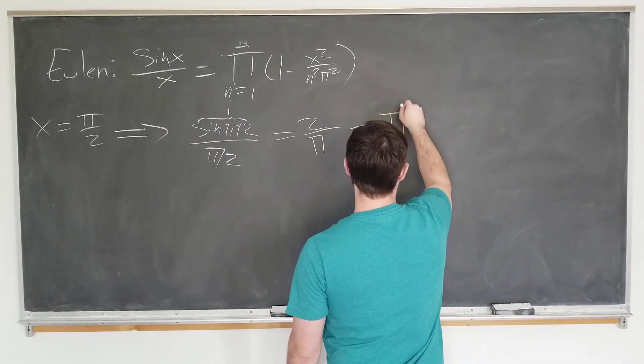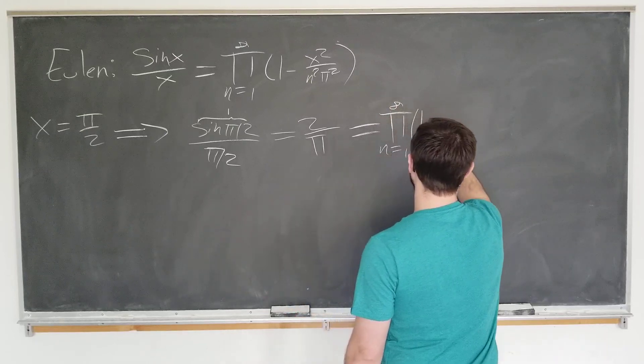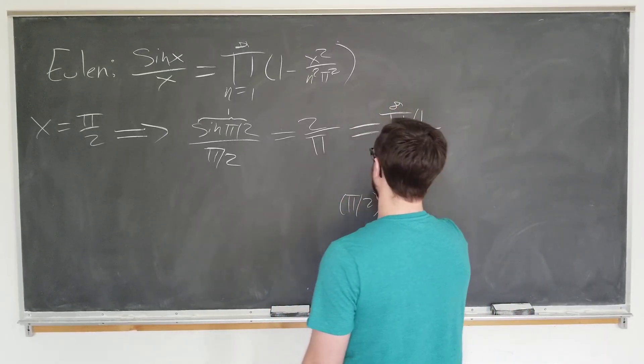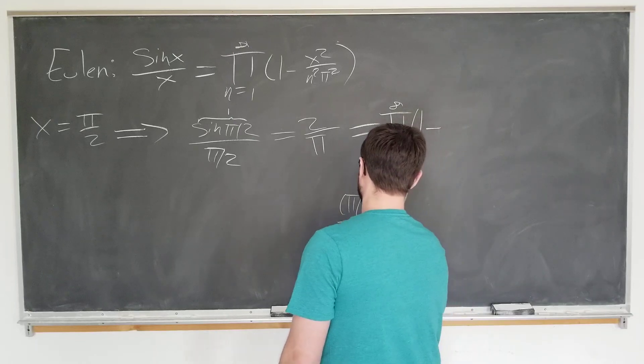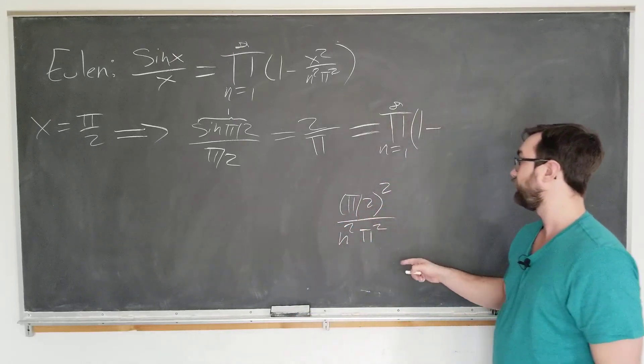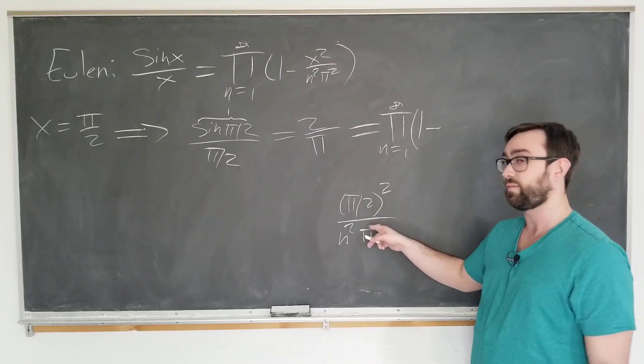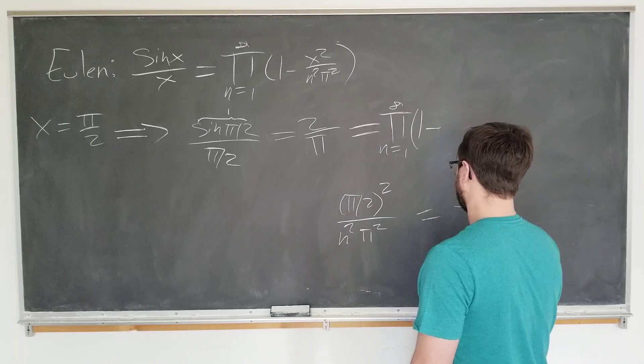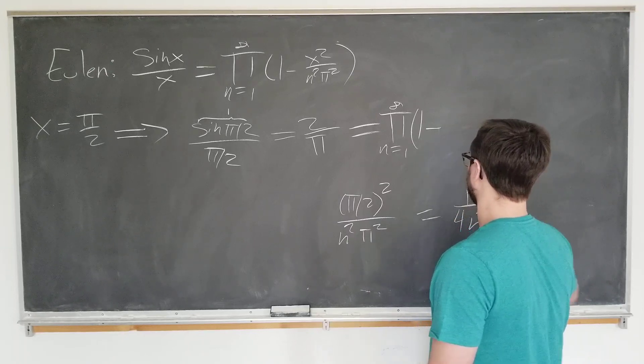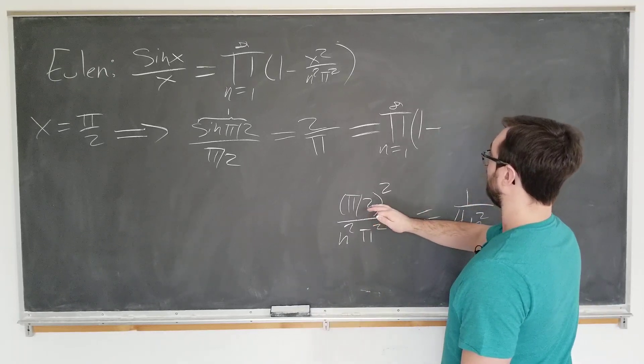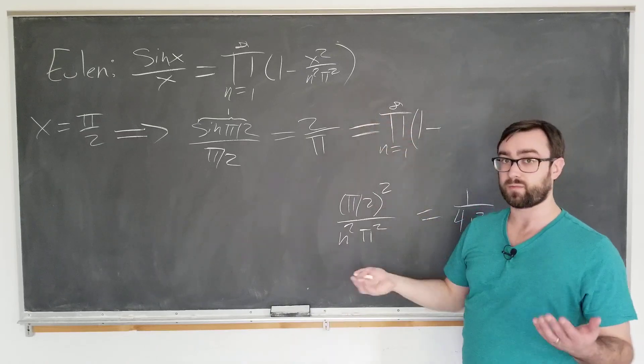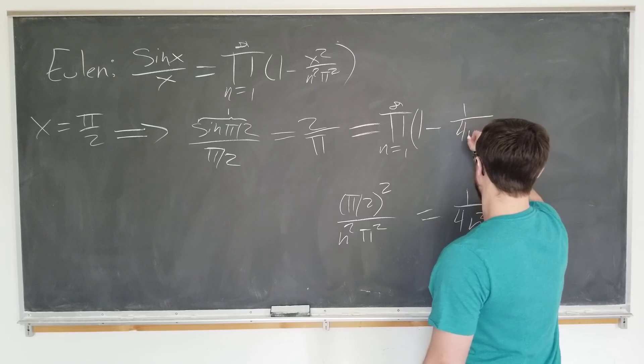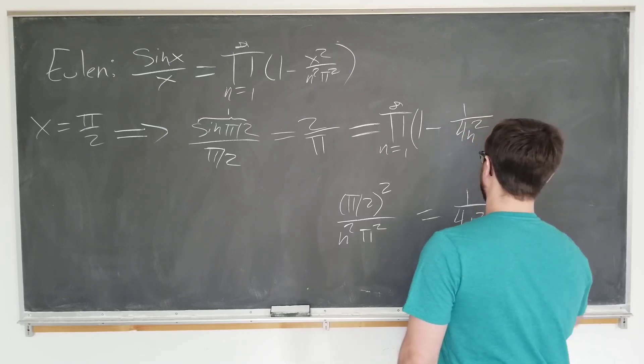And this is actually equal to the thing on the right-hand side. So, as n goes from 1 to infinity, we have the product of 1 minus pi over 2 squared over n squared pi squared. Well, we see that the cancellation of the pi's is going to happen. And this just becomes 1 over 4n squared. So, we get 1 minus... Yeah, there's no x because we're plugging in x equals pi over 2, of course.